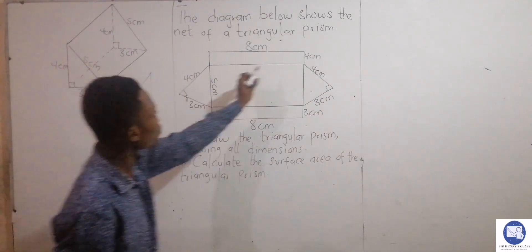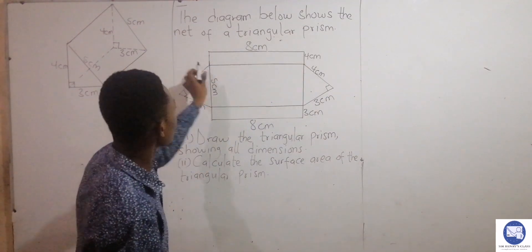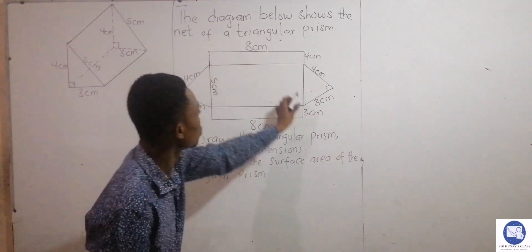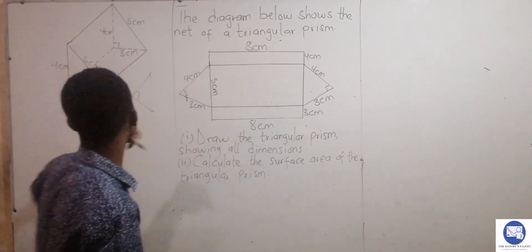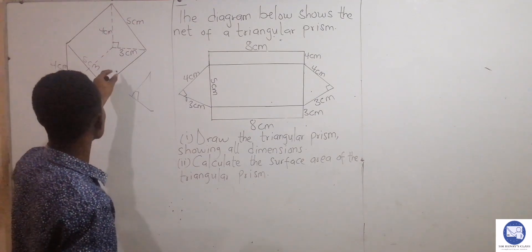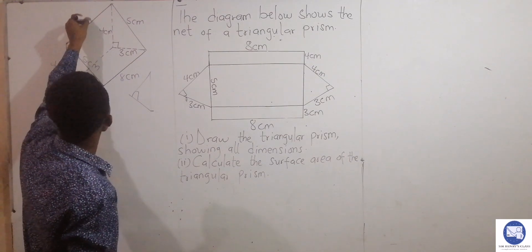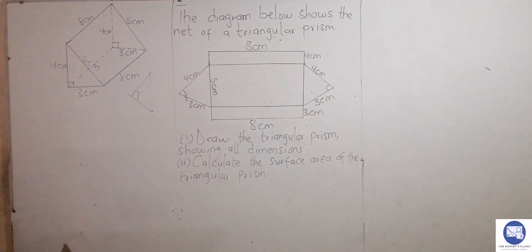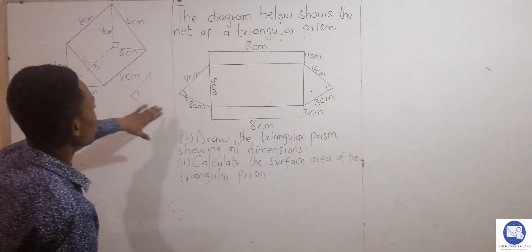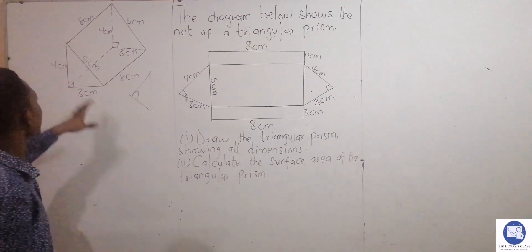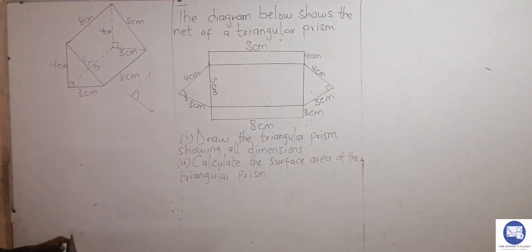Now, this is one of the rectangles. We have rectangle one, rectangle two, and rectangle three. The length of each of the rectangles is eight centimeters — this side appears to be the length, so eight centimeters. The base here is five. Then for the triangle, we have the longer side five, and four. So this is the complete prism.